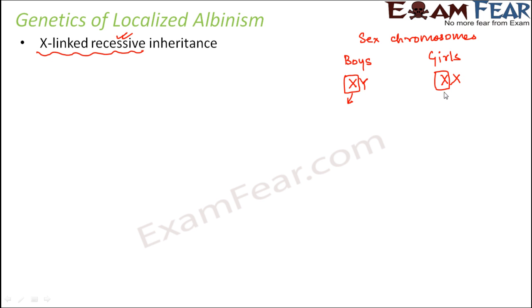But in the case of girls, if they have only one copy of the defective gene, they will be a carrier of the disease but they will not be affected. That would be a heterozygous condition for girls — they will not be affected but will carry the defective gene. Therefore, this disease mostly affects boys.